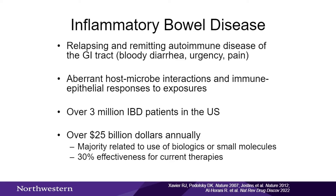Inflammatory bowel disease encompasses both Crohn's disease and ulcerative colitis. It's a relapsing, remitting autoimmune disease of the GI tract, pathogenically a function of an aberrant host-microbe interaction and immune epithelial responses to those exposures. The spatial environment becomes extremely critical for understanding disease processes. This is a prevalent disease with over 3 million IBD patients in the U.S., costing over $25 billion annually, with the majority spent on biologics and small molecules targeting the immune system — but the efficacy of them is only 30%, creating a critical need for drug discovery and development.